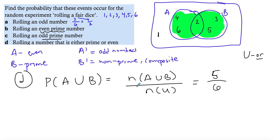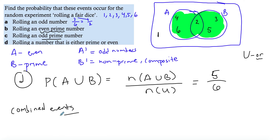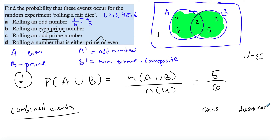Another way to look at this is through combined probability, or combined events. These are events where two conditions can happen at the same time. I said either prime or even, and there are numbers that are both prime and even — in this case, two. Contrast this with something like 'it either rains or it doesn't rain' — you can't have both happening at the same time, so those are not combined events.